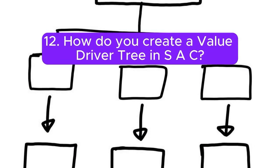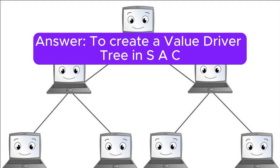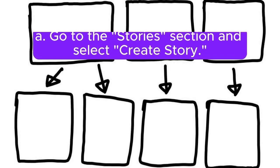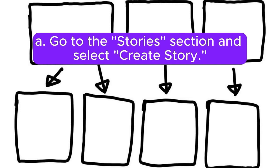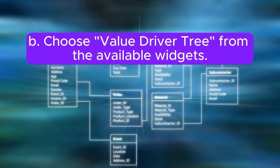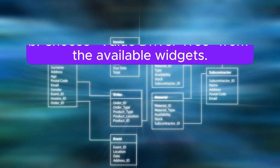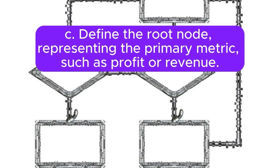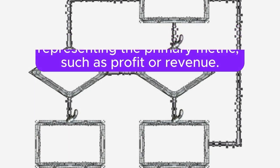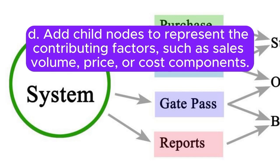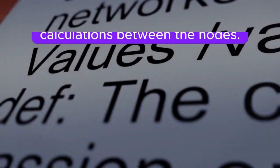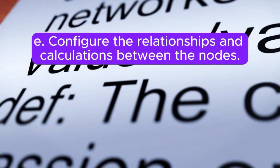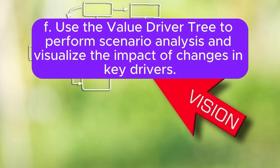Question 12: How do you create a value driver tree in SAC? Answer: To create a value driver tree in SAC: A. Go to the Stories section and select Create Story. B. Choose Value Driver Tree from the available widgets. C. Define the root node representing the primary metric, such as profit or revenue. D. Add child nodes to represent contributing factors, such as sales volume, price, or cost components. E. Configure the relationships and calculations between the nodes. F. Use the value driver tree to perform scenario analysis and visualize the impact of changes in key drivers.